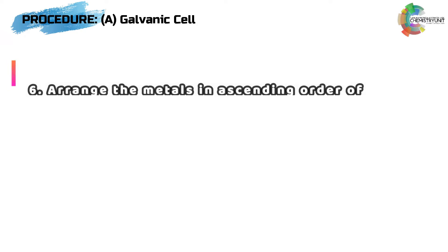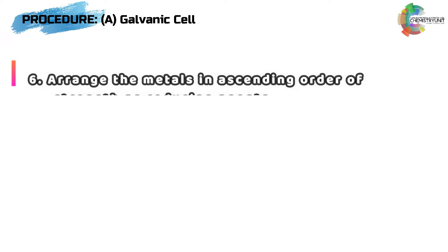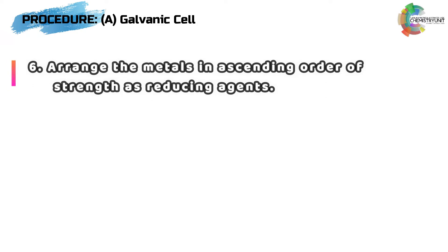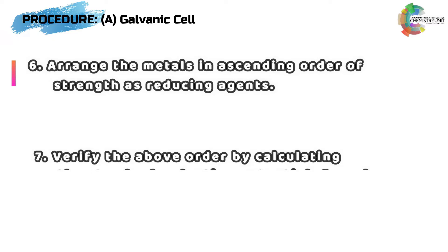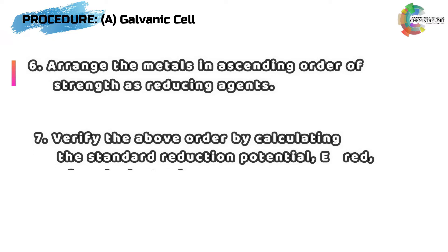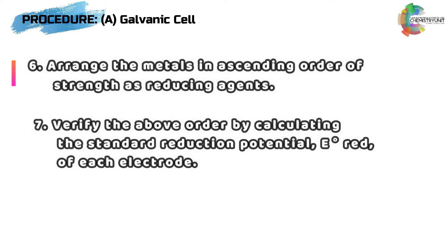Step 6: arrange the metals in ascending order of strength as reducing agents. Finally, step 7 for Part A: verify the above order by calculating the standard reduction potential E-not-red of each electrode.